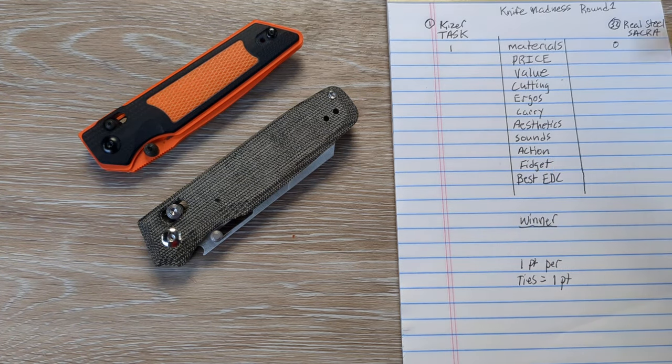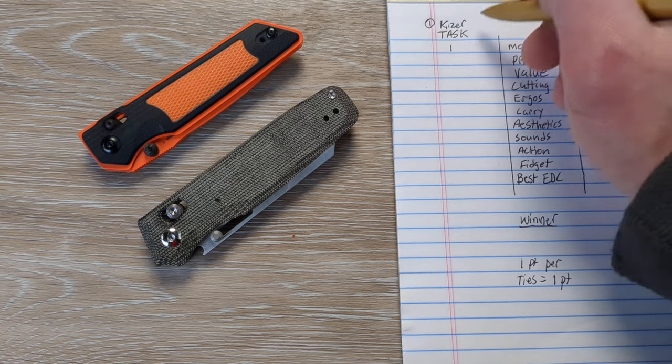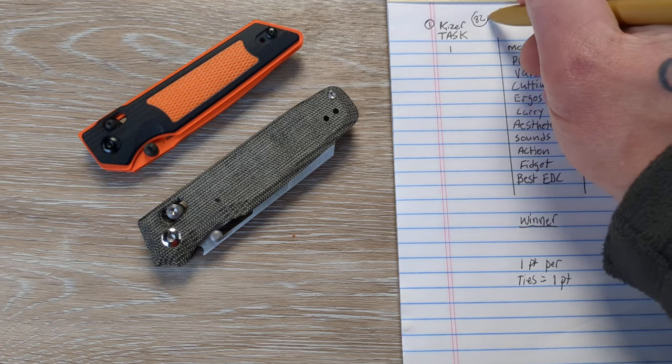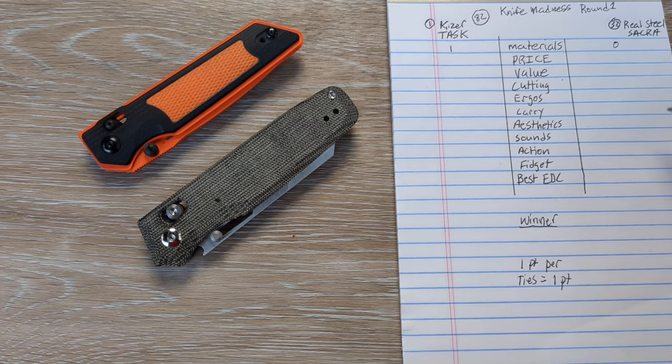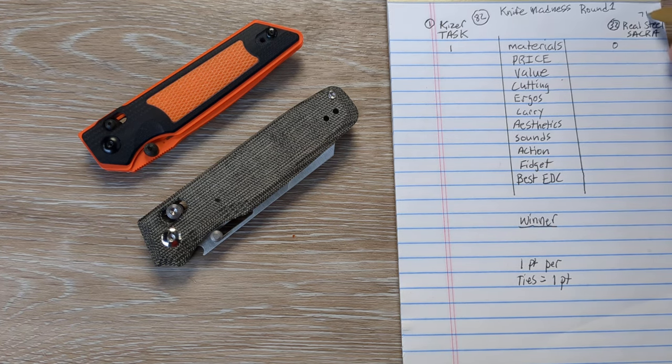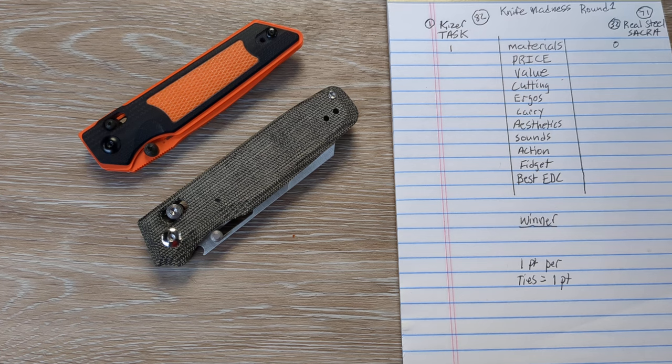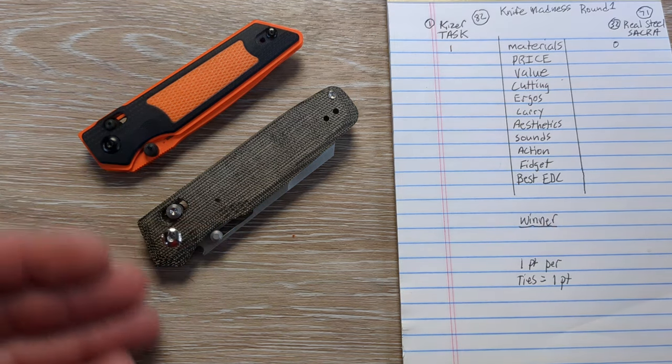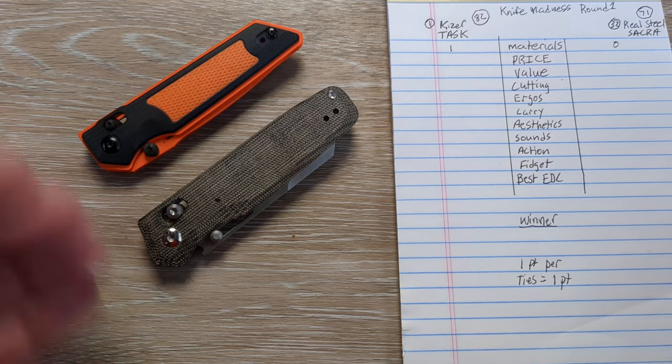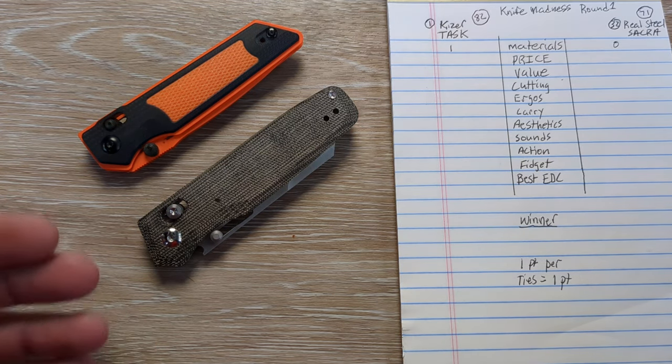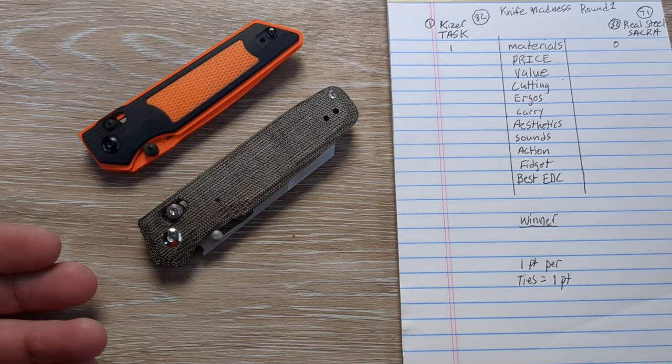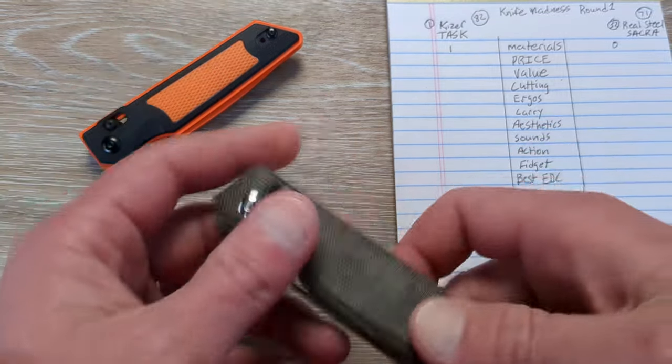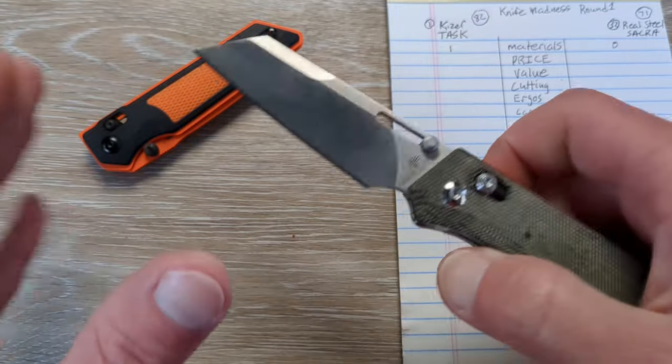So the next category is going to be price. The Kaiser Task is coming in at $82. That's the cheapest I could find it. The real steel Sakra is going to be coming in at $71. So if we take everything into account, the pricing is not bad for both of these knives. I think it's pretty close. Kind of what goes into both of the knives and how well the fit and finish is of each of these.